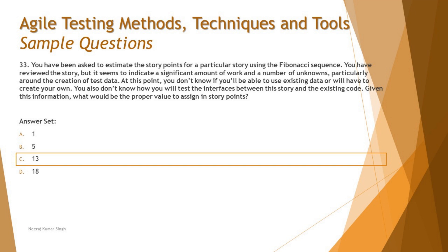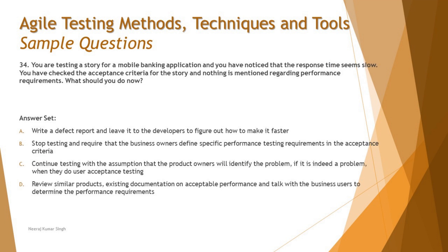The next question is 34. You are testing a story for a mobile banking application and you notice that the response time seems slow. You checked the acceptance criteria for the story and nothing is mentioned regarding performance requirements. What should you do? This is a very clear and straightforward scenario. The response time is slow, which you can observe while testing, but the acceptance criteria contain nothing specific about performance requirements such as what the response time should be.